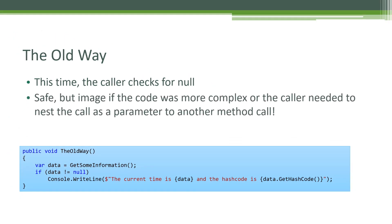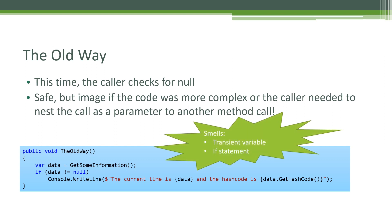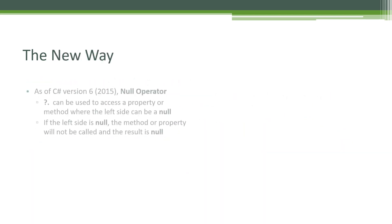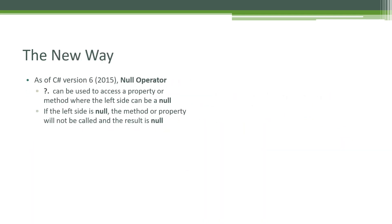This introduces a couple of code smells: one of them is having a transient variable, and it also contains an if statement. The new way, as of C# version 6, is to use the null operator.